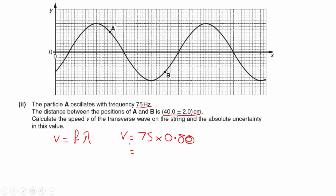That's going to give us 60 meters per second and we need to work out the absolute uncertainty. So what I would do is say, if we've got this plus or minus 2 centimeters, if I do the absolute uncertainty, 0.02, and multiply that by my frequency which is 75, then that comes out as being 3 meters per second. So I would say plus or minus 3 meters per second.